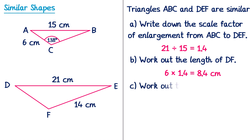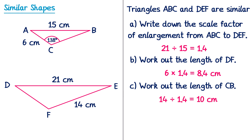For the third part we need to work out the length of CB. The matching side on the other shape is EF at 14cm. Since we're going from DEF back to ABC we divide by the scale factor: 14 divided by 1.4 gives 10. So CB is 10.